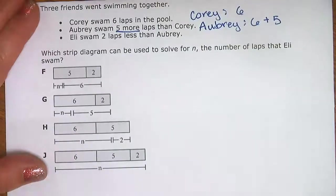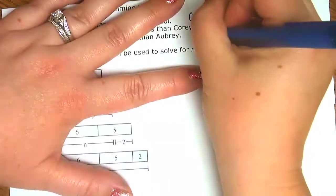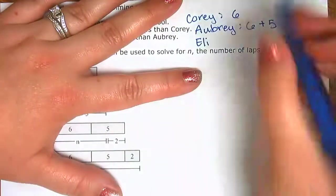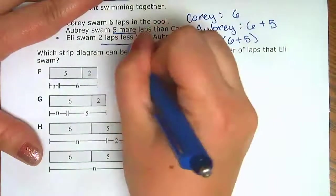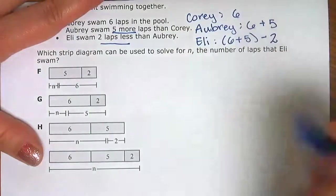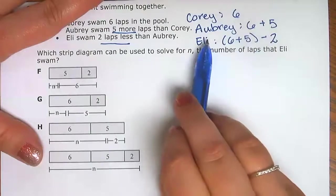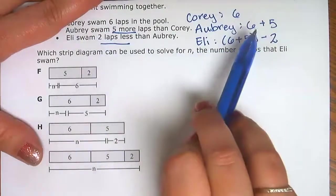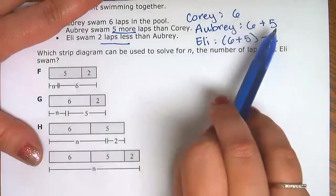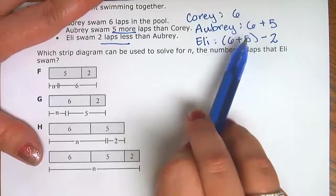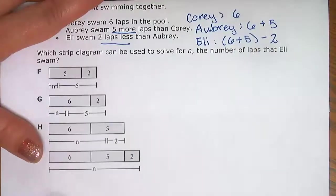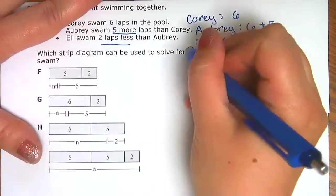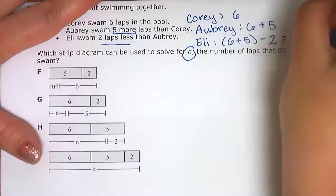Eli swam two less than Aubrey. So for Eli, we start with Aubrey's total, which was 6 plus 5. In math, parentheses means first step, so we put that in parentheses and then Eli was two less than that, so we subtract two: (6 + 5) − 2. We're not actually solving the problem — we're looking for the strip diagram that matches how to solve it. The variable we're using is N for Eli.